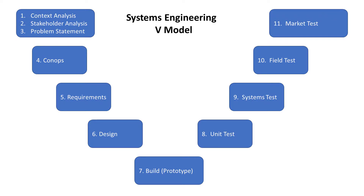From here we'll write our problem and need statement. Once we know our problem we can write the concept of operations, or the CONOPS paper, which outlines the solution we'll propose. In the CONOPS we describe the features the system has and how the user will use it. After the client accepts the concept paper we'll write the requirements document, which describes in a clear and testable manner the criteria the system must have.